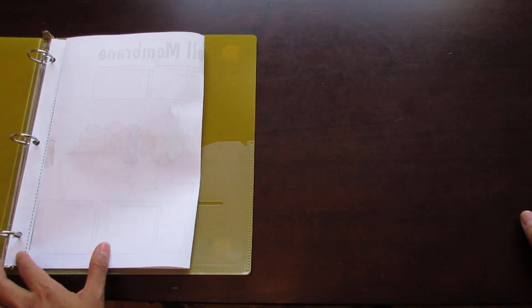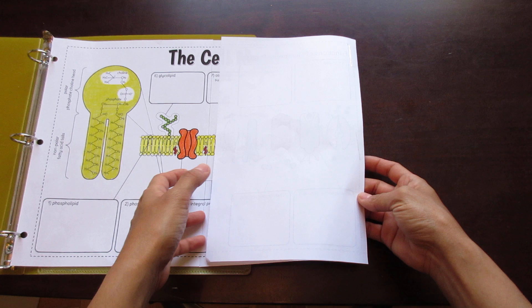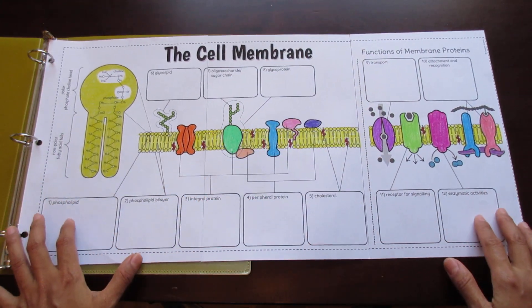form this neat little foldable that fits inside of a binder without impeding the binder rings. For an interactive notebook, you would just cut along the dashed edges to make this foldable smaller.